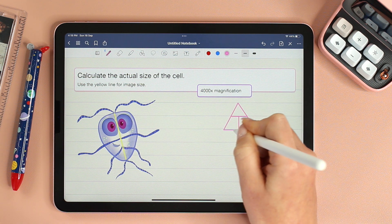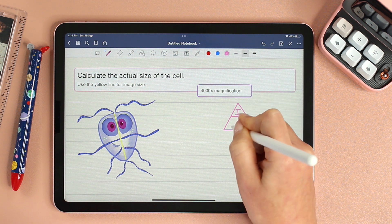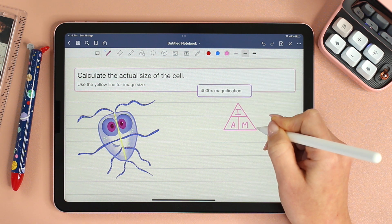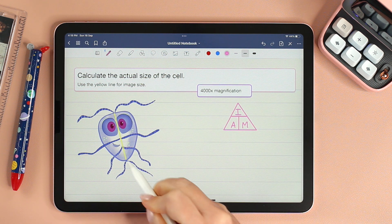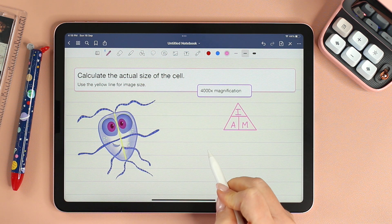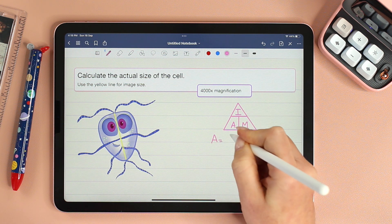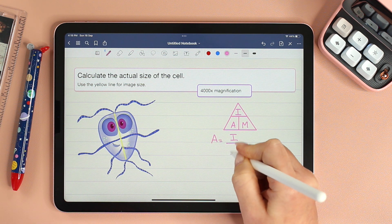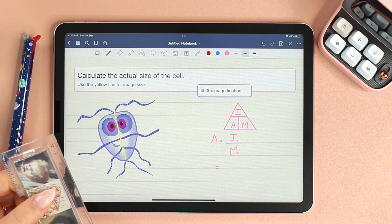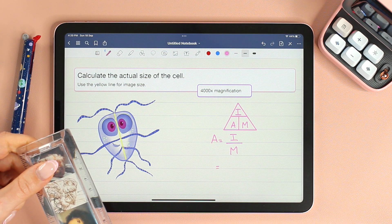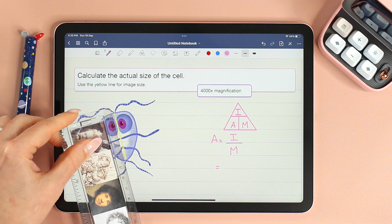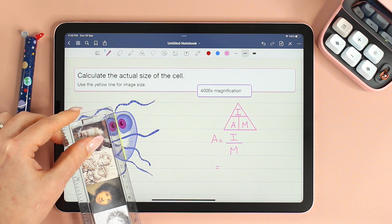As always, we're going to start with a triangle: I-A-M. We know the magnification, we know the size of the image, and we are asked to find the actual size A. So A is image size divided by magnification. For the image size you will use a ruler. You will place it on the yellow line and I can